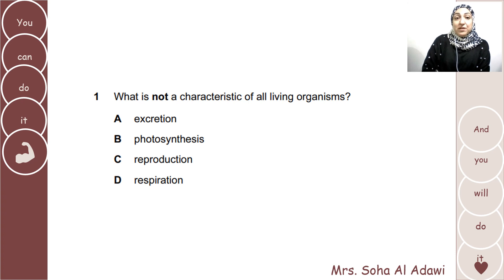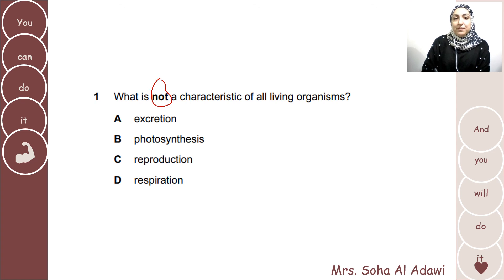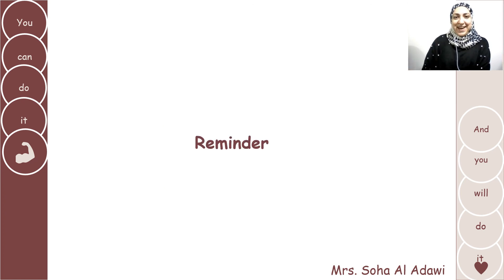Pay attention — most students miss the word 'not.' Which is NOT a characteristic of a living organism? Excretion is a characteristic. Reproduction is a characteristic. Respiration is a characteristic. Photosynthesis is NOT a characteristic, because for example we are living organisms but we don't perform photosynthesis.